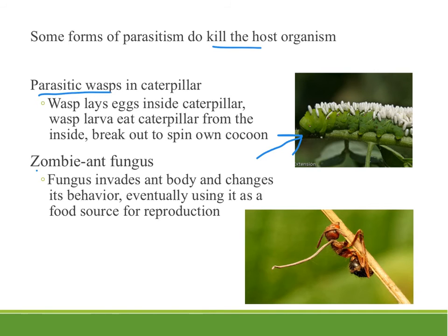Another strange example is the zombie ant fungus. Fungal spores invade an ant's body and change the ant's behavior, causing it to move away from the colony, climb up a stick, hang on the underside, bite into the plant with its mandibles, and die in that position. The fungus then grows out of the ant's body and releases spores downward onto more ants to infect. The fungus essentially controls the ant's behavior — ants would never normally leave their colony to hang halfway up a tree branch.